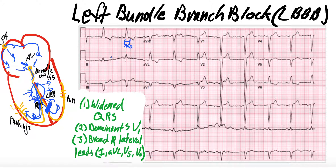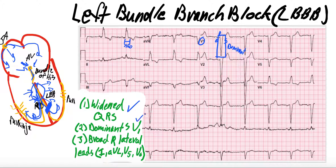In addition to that, we talked about this dominant S wave in V1. If we go to V1 here, we have our Q, then R would be up, and then this is S — you have this huge dominant S wave in V1. You can see that persisting through V2 and V3 as well. But specifically in V1, we get this dominant S wave. The dominant S wave in V1 is less thought about; usually we think about the widened QRS and then the broad R waves in the lateral leads.